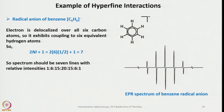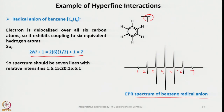Of course I showed you the benzene radical anion — 6 hydrogen atoms interact with the lone electron to give 7 lines, and here those 7 lines can be seen. This is a beautiful EPR spectrum of benzene radical anion, and it can also be displayed in this alternative representation.